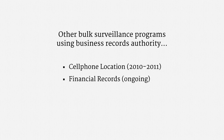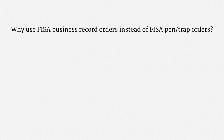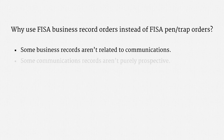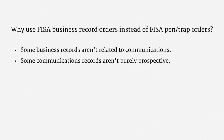Of course, there certainly could be other programs that just remain classified. You might be wondering why the NSA would use FISA business record orders for some bulk surveillance programs but FISA pen trap orders for another. One reason is that some business records just aren't related to communications — the CIA's financial records program, for instance, simply couldn't qualify as a pen trap. Another reason is that some communications records aren't purely prospective. Think about phone records, for example: telecoms are already planning to keep those records on file for a period, so there is a retrospective quality to getting those records from telecoms.